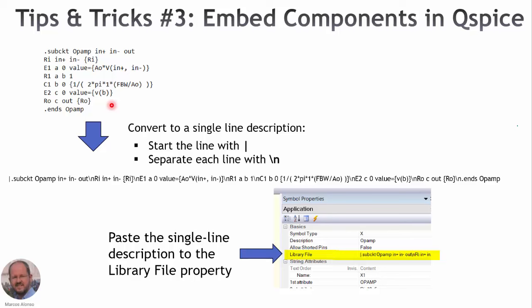The process is very simple. We start with the definition of our converter in Spice as shown here and we have to convert all this description into a single line with the following rules: we start with the pipe symbol, the vertical bar. As we know, this symbol is used in Linux for example to do the redirection of information, so this symbol is also used here.